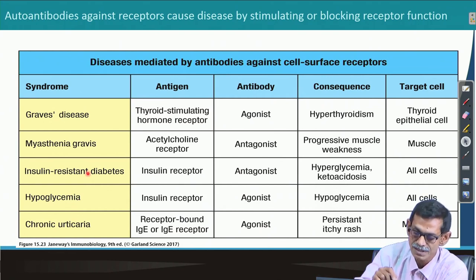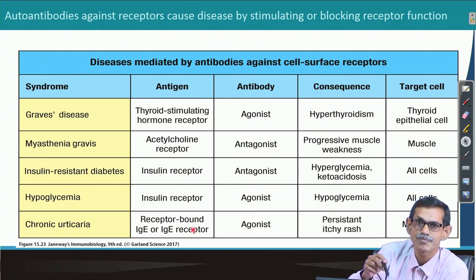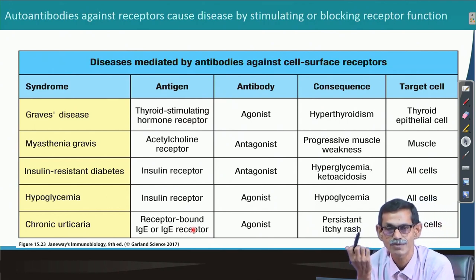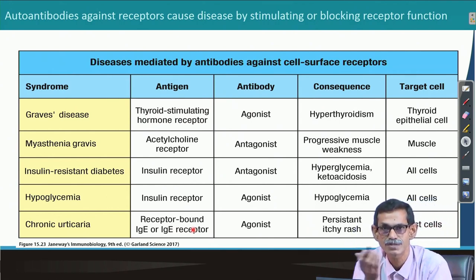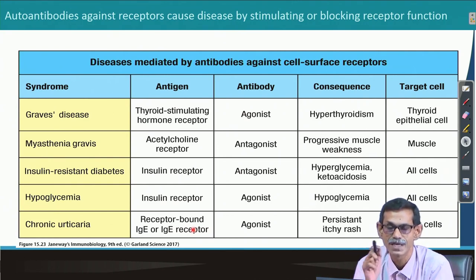Another case is when there is an IgE receptor agonist — this will produce a continuous hypersensitivity-type reaction, causing rashes. These are different examples of receptor-mediated autoimmunity.